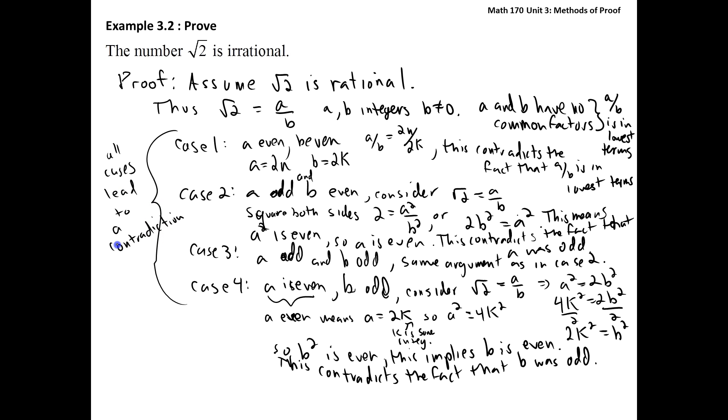So we must conclude, then, that our original assumption that the square root of 2 is rational is wrong. So the square root of 2 is actually irrational. And that's what we're trying to prove.